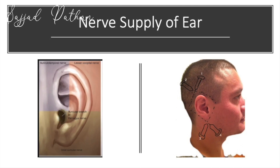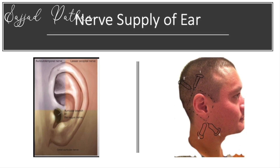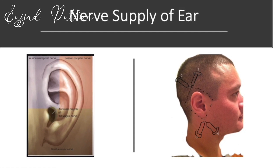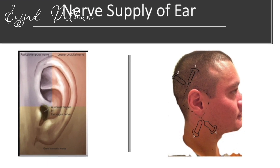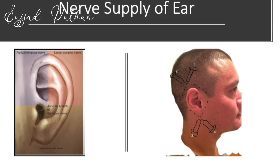Now let us look at the nerve supply of the ear. The block is performed in a scissor fashion — infiltrating 1 cm above and 1 cm below the ear. The anterior part of the ear is supplied by the auriculo-temporal nerve. The posterior part of the upper ear is supplied by the lesser occipital nerve. The lower half of the ear is supplied by the greater auricular nerve.